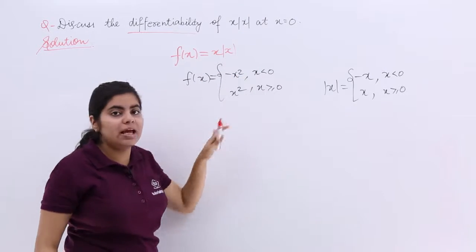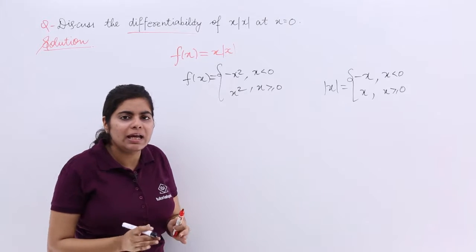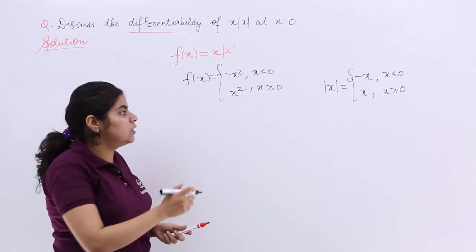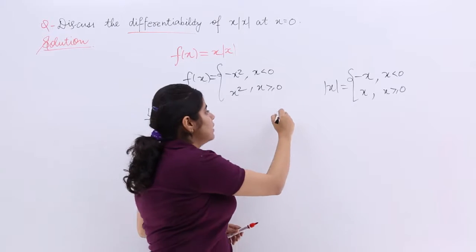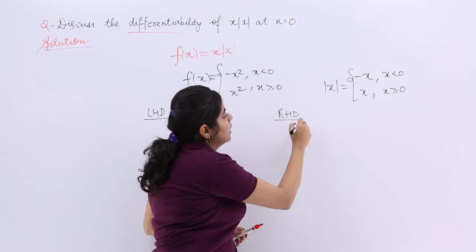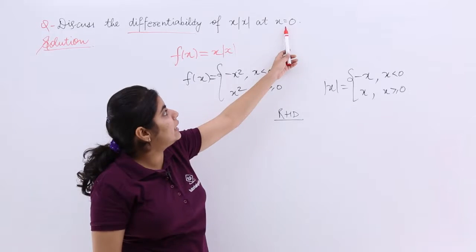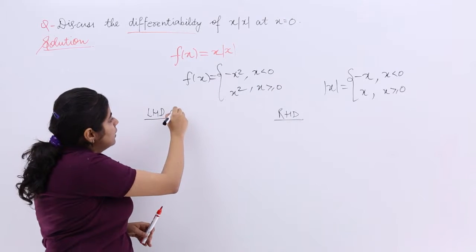x square and minus x square, two values. And these two values actually help me in finding out the left hand derivative and the right hand derivative. The left hand derivative at x is equal to 0 is what? Let's see.